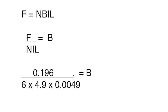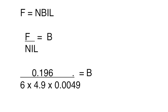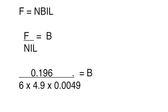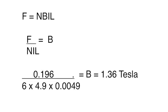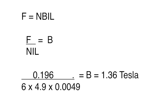Substituting these numbers into our rearranged equation will give us the value of B, the magnetic flux density. That calculates to 1.36, the units being Tesla.